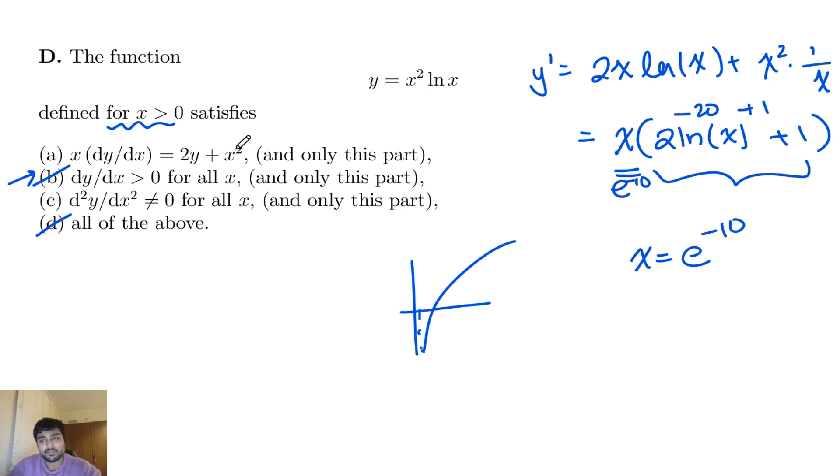If I come back to this equation here and multiply through by x, I get x times y prime equals 2x squared ln x plus x squared. And x squared ln x is just y. So that's 2y plus x squared. And so therefore, this must be true. And since there can only be one correct answer, it must be a.